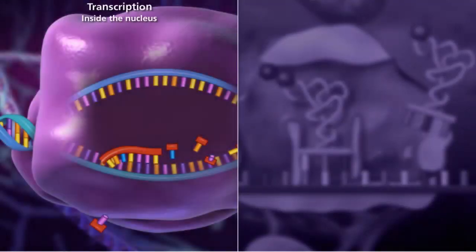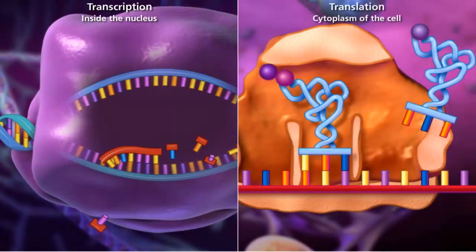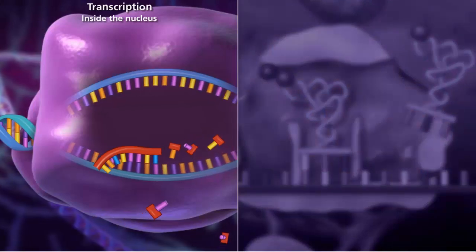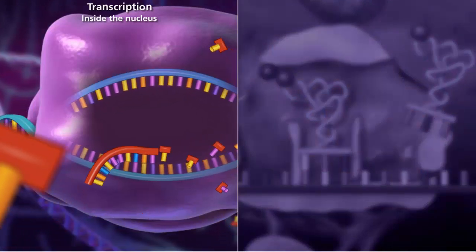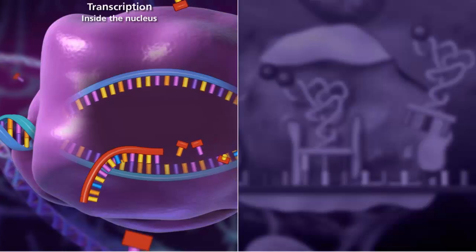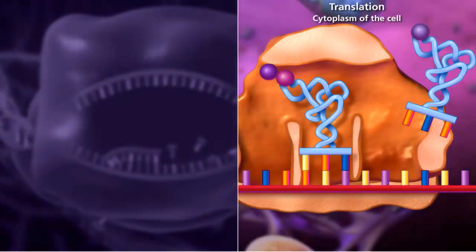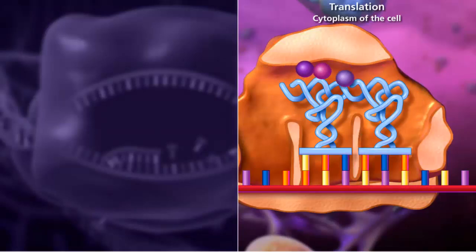In eukaryotic cells, transcription occurs in the nucleus where DNA is used as a template to make messenger RNA. Then in translation, which occurs in the cytoplasm of the cell, the information contained in the messenger RNA is used to make a polypeptide.